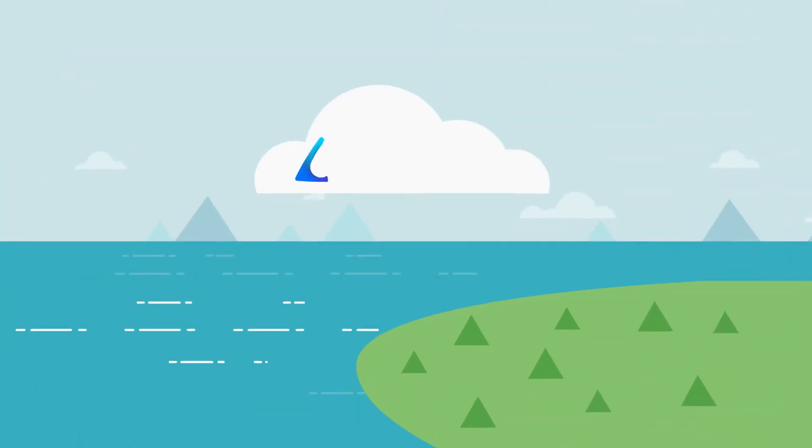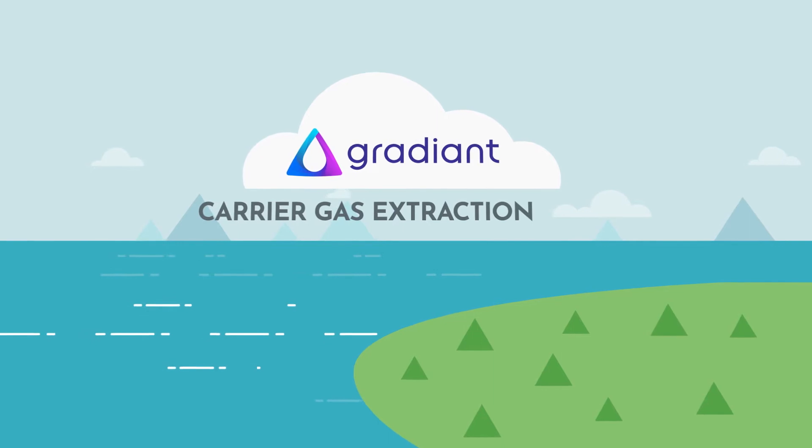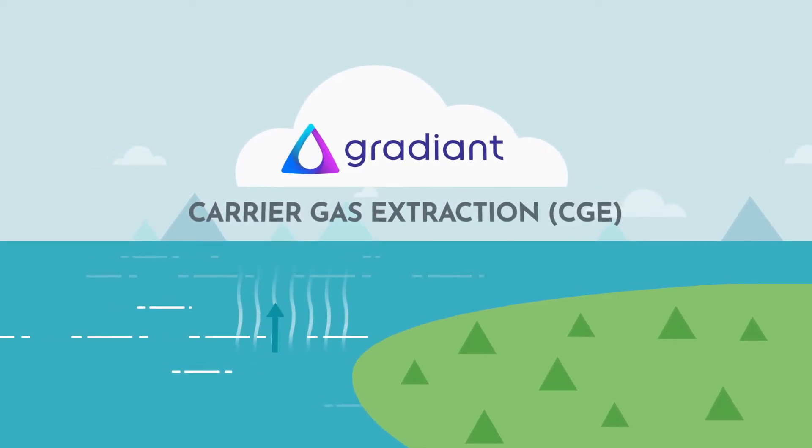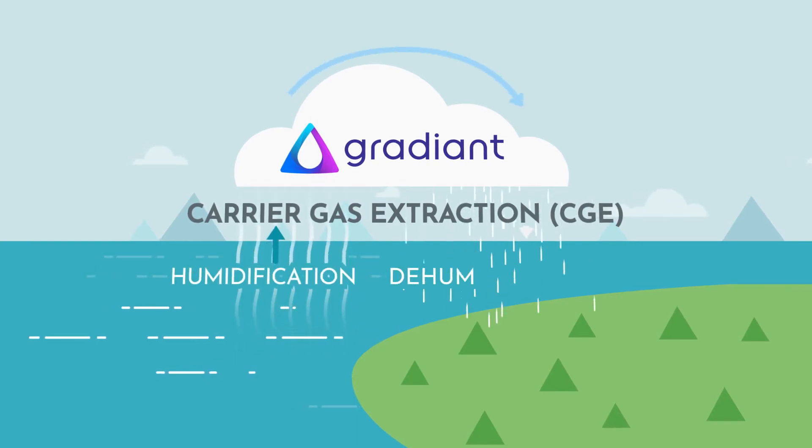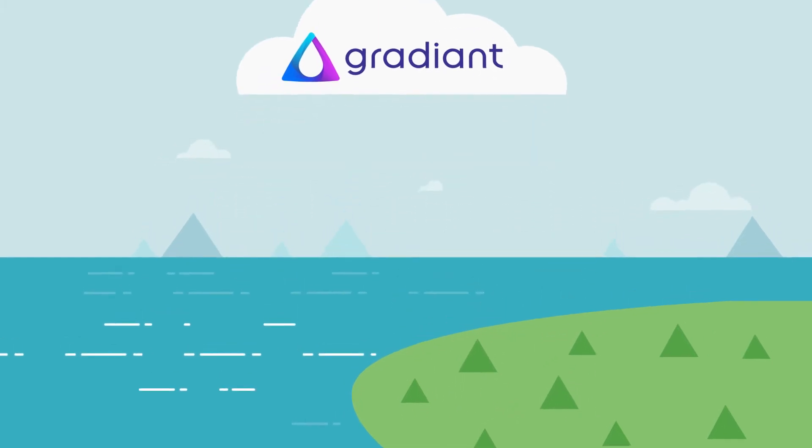Until now. Gradient developed a process called Carrier Gas Extraction, or CGE, that mimics nature's hydrologic cycle. The process is inspired from humidification dehumidification, much like how a cloud is formed and releases fresh water back to the Earth. Let's take a look.